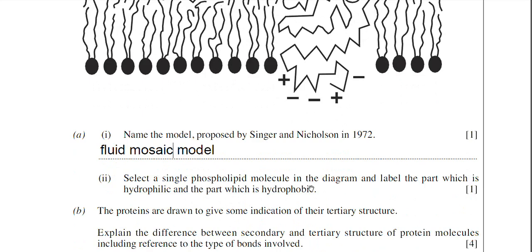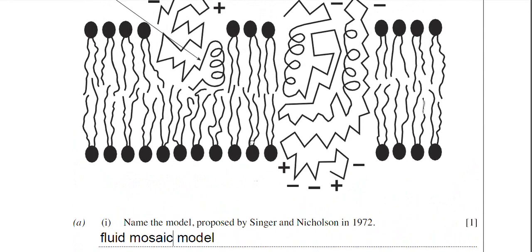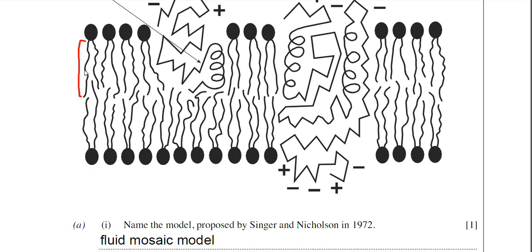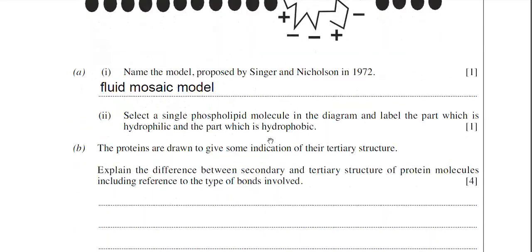Question A2 asks us to select a single phospholipid molecule in the diagram and label the hydrophilic and hydrophobic parts. The phospholipid heads, indicated by the red arrow, are the hydrophilic regions — they are water-loving. The tails of the phospholipids are the hydrophobic regions. Remember to label both the hydrophilic head and the hydrophobic tail on the diagram.